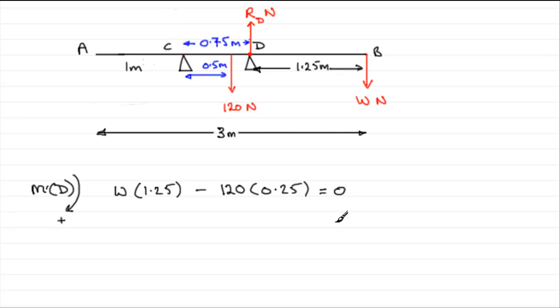So we just need to solve this now. So we've got W times 1.25, so that's going to be 1.25W. 120 times 0.25 is 30. Minus 30, add it to both sides, and you get equals 30. Divide both sides by 1.25, and you get W equals 30 over 1.25. Work that out on your calculator, and it comes out that that weight W is exactly 24 Newtons.